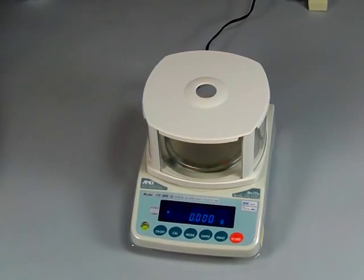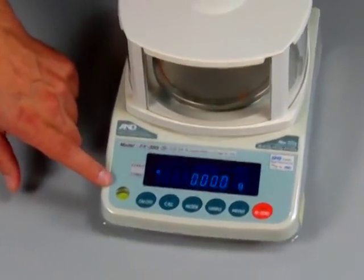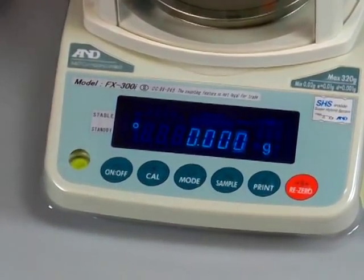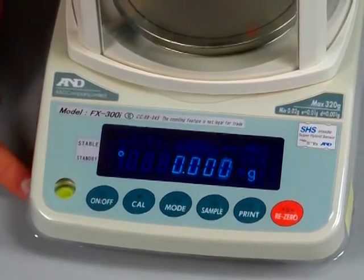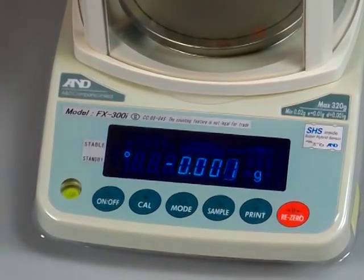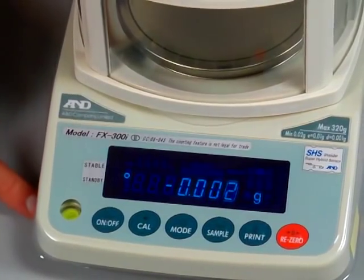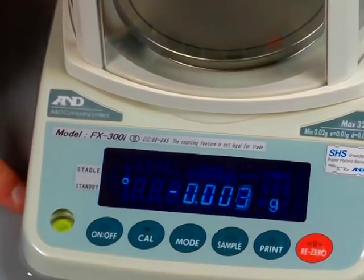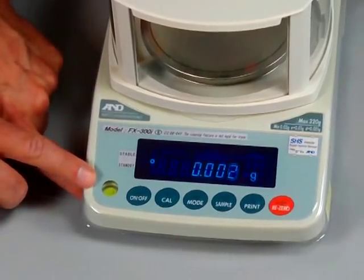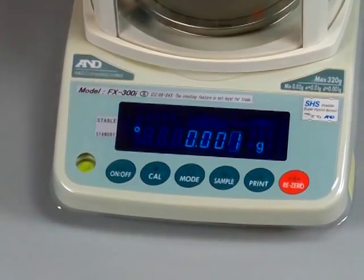It is a force restoration balance. We'd like to show you some of the features today. You'll notice the balance has a spirit bubble indicator in the front so that you can level your balance. Leveling the balance is critical because you want to have your mass perpendicular to your weigh cell. Especially dealing with a milligram balance or anything greater, you always have to have your bubble level. As I adjust the feet, the bubble's moving. So the spirit bubble indicator helps you level the balance.